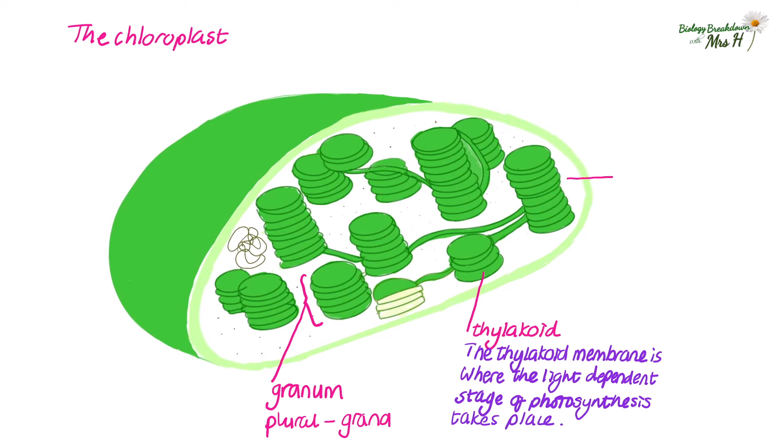The fluid part of the chloroplast is called the stroma and the second stage of photosynthesis takes place in the stroma and is called the light independent stage of photosynthesis.